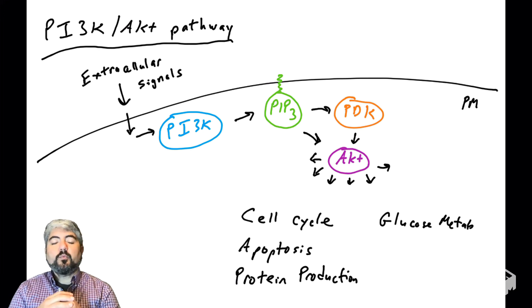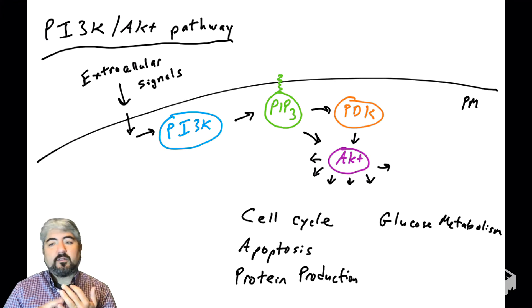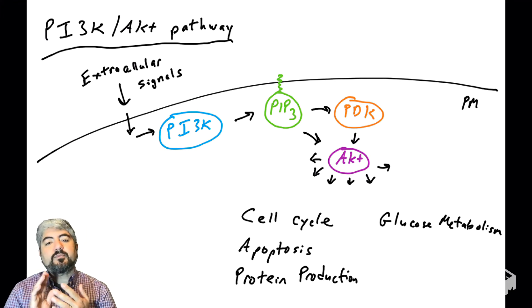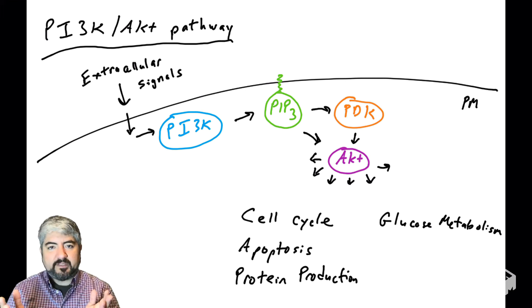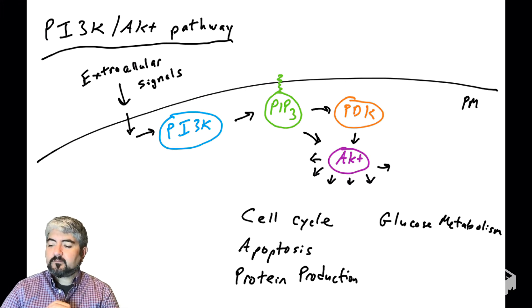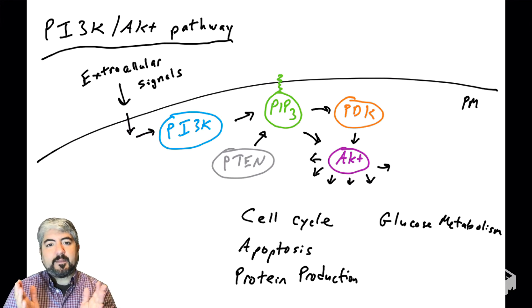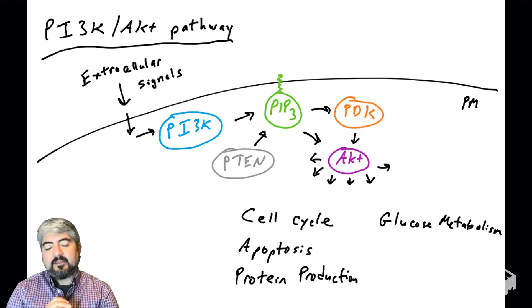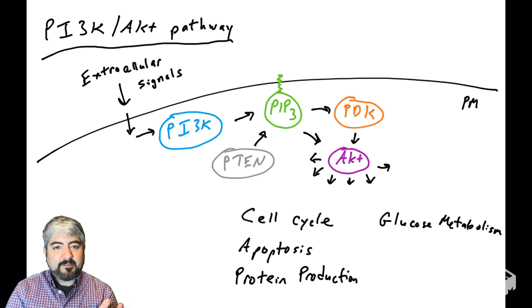Those functions include a wide variety of cellular areas, including the cell cycle, apoptosis, glucose metabolism, and protein production. So AKT is the central key regulator in all these cellular processes. There's one more important player in this pathway called PTEN, which acts upon PIP3. PTEN is a phosphatase that will remove a phosphate from PIP3. So these are the central regulators and central players in the PI3 kinase AKT pathway.